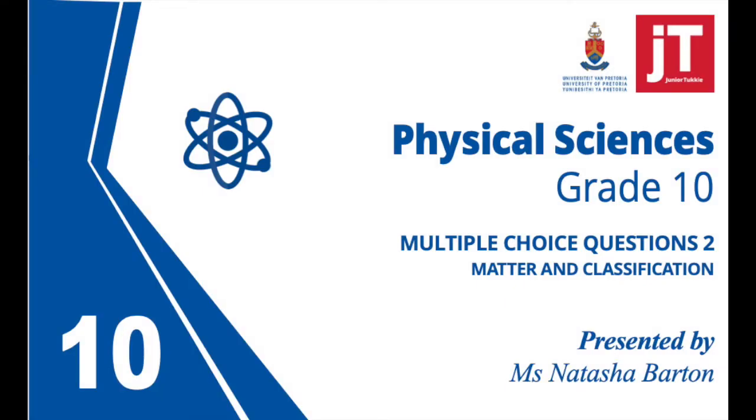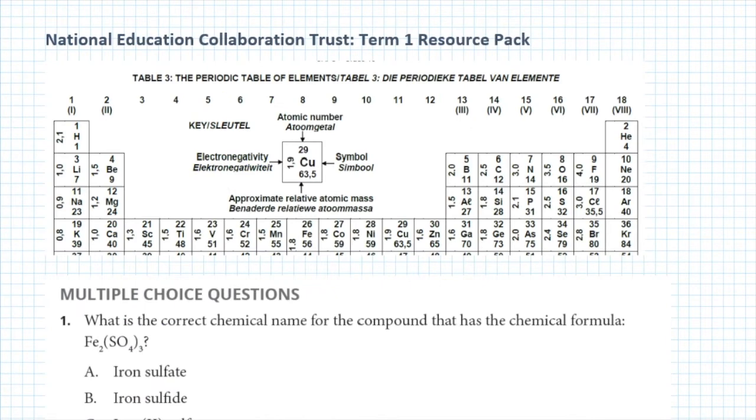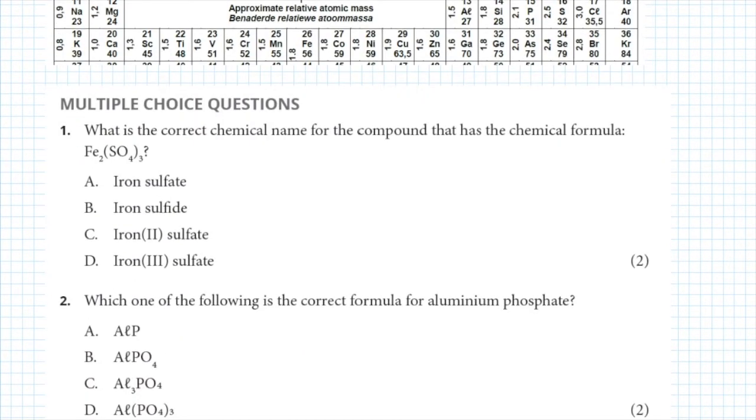Hello Great Tens and welcome back to another video where we'll work through multiple choice questions. Question number 1 asks: what is the correct chemical name for the compound with the chemical formula Fe₂(SO₄)₃?